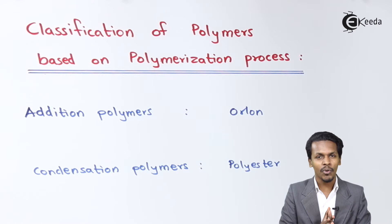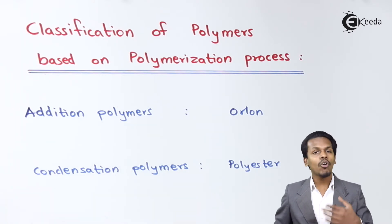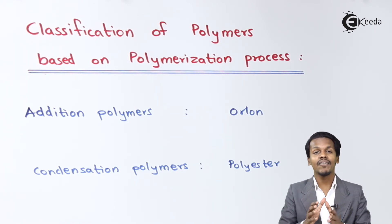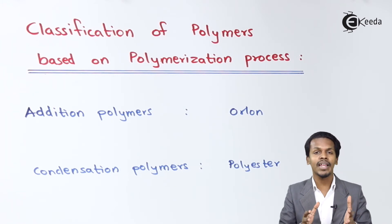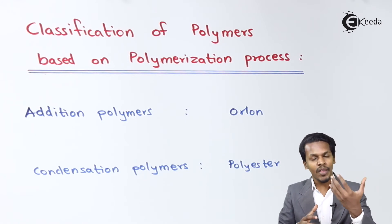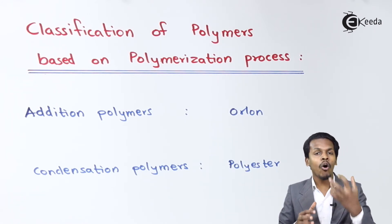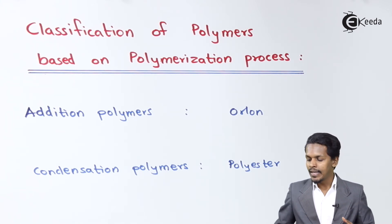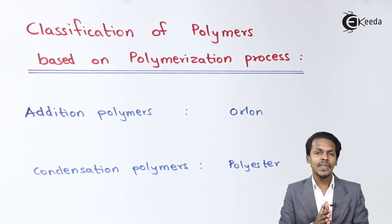Now let me elaborate a few differences between these two. The polymers obtained through addition reactions are the ones which will have the same number of atoms. For example, suppose if I'm taking 10 moles of a particular monomer and preparing a polymer out of it, the polymer will contain all the atoms that I have introduced.